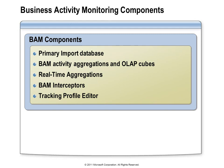Calculating real-time aggregations can be costly in terms of performance, so it's more likely you'll want to use OLAP cubes to calculate those aggregations. Under those circumstances, the data will be copied from the BAM primary import database to the BAM star schema database, which serves as a staging area for the OLAP cubes. The components that actually collect the data written to the BAM databases are known as BAM interceptors — you could think of a BAM interceptor as a wiretap.